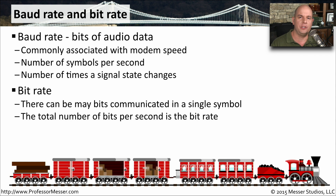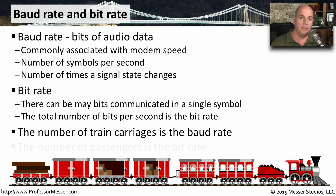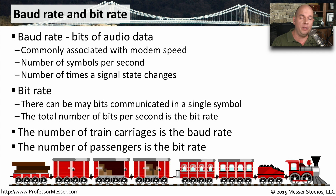To extrapolate this into something easier to understand, we can look at a train. As the different train carriages pass by, we can refer to that as the baud rate. But inside each carriage may be a number of people — those represent the bits communicated by those symbols. The total number of passengers would be the total bit rate for that connection.